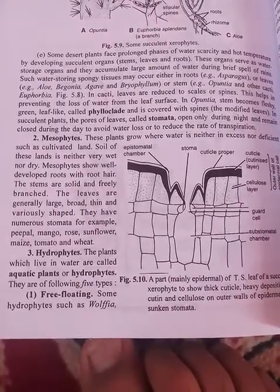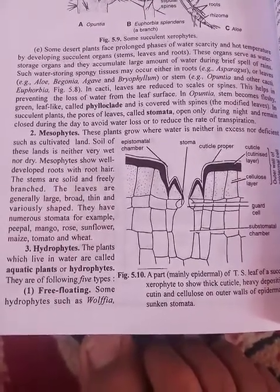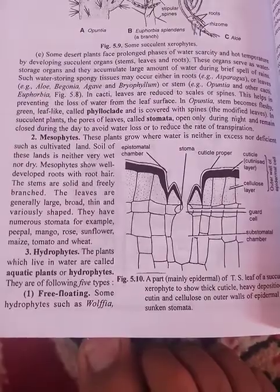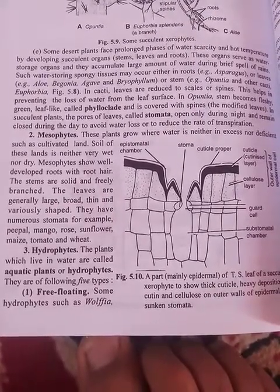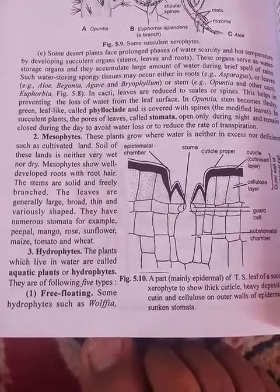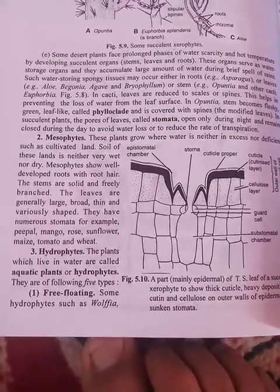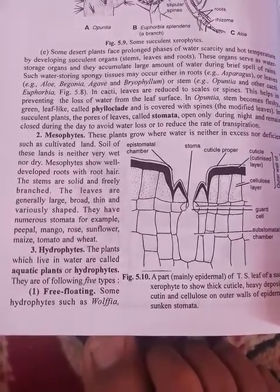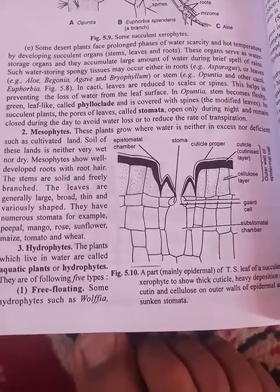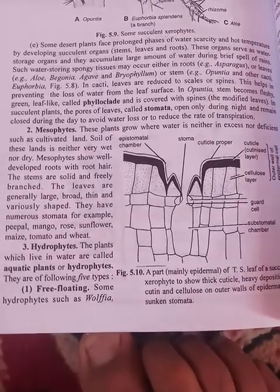Today we will discuss mesophytes. Mesophytes are plants that grow where water is neither in excess nor deficient, such as cultivated land. These plants grow in places where the quantity of water is sufficient for cultivation. The soil of these lands is neither very wet nor very dry.